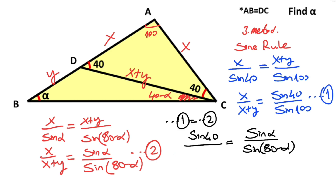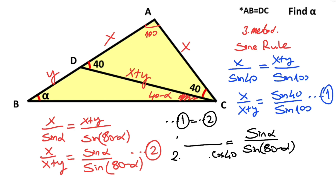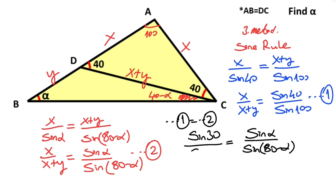We can use sine 80 instead of sine 100, and expand: sine 80 equals 2 times sine 40 times cosine 40. The sine 40 terms cancel. Then we can write sine 30 instead of one-half, and sine 50 instead of cosine 40. From this we can see easily that alpha equals 30 degrees. Thanks for watching!